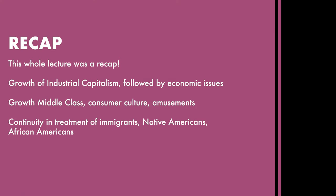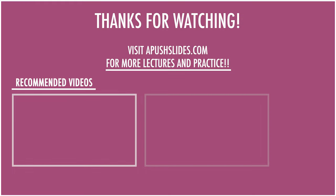Here's the recap: one of the biggest developments in this period is the growth of industrial capitalism, followed by economic issues like the growing gap between rich and poor, the debate on currency and the gold standard, and continued panics from overspeculation. There's a growth of the middle class, which fuels the growth of consumer culture and new amusements. Finally, there's a continuity in the treatment of immigrants, Native Americans, and African Americans. Thank you for watching. If you'd like to watch the next lecture, click the video link on the screen, and for more practice for the AP exam, visit apushlights.com.